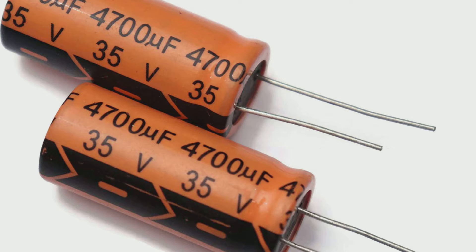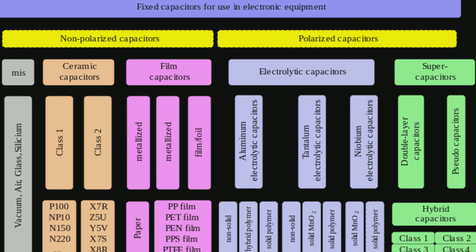In electrical circuits, large value capacitors are used for energy storage in applications such as strobe lights, and as parts of some types of electrical motors — for example, in single-phase induction motors, capacitors are used for phase splitting. For power factor correction in AC power distribution systems, power capacitors are used. Standard capacitors have a fixed value, but adjustable capacitors are frequently used in tuned circuits and radio applications.